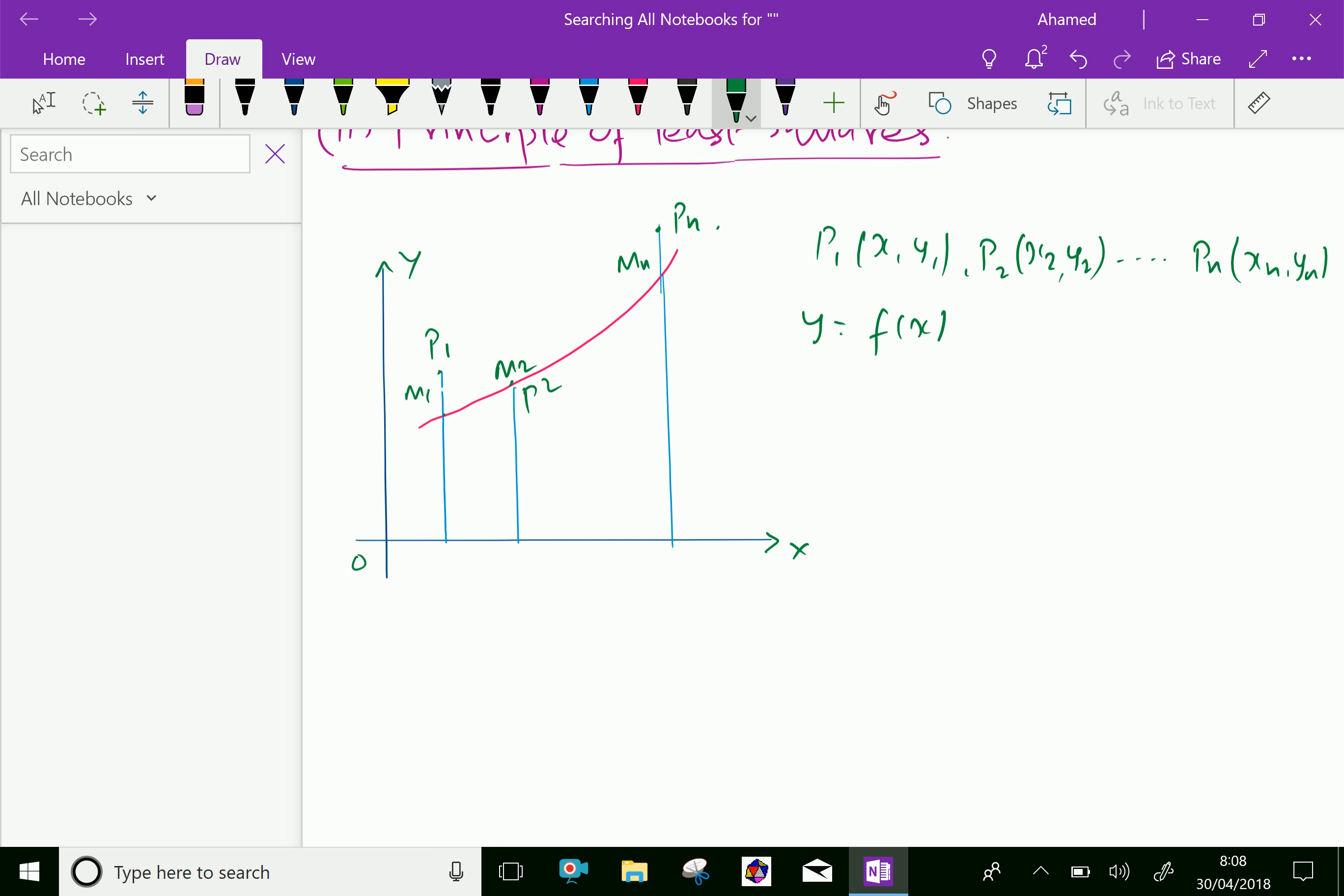Now when by approximation x equals x1, the observed value of y1 is y1 equal P1N1. N1 means this point is N1, here N2, and N3 and N4, like that up to Nn.